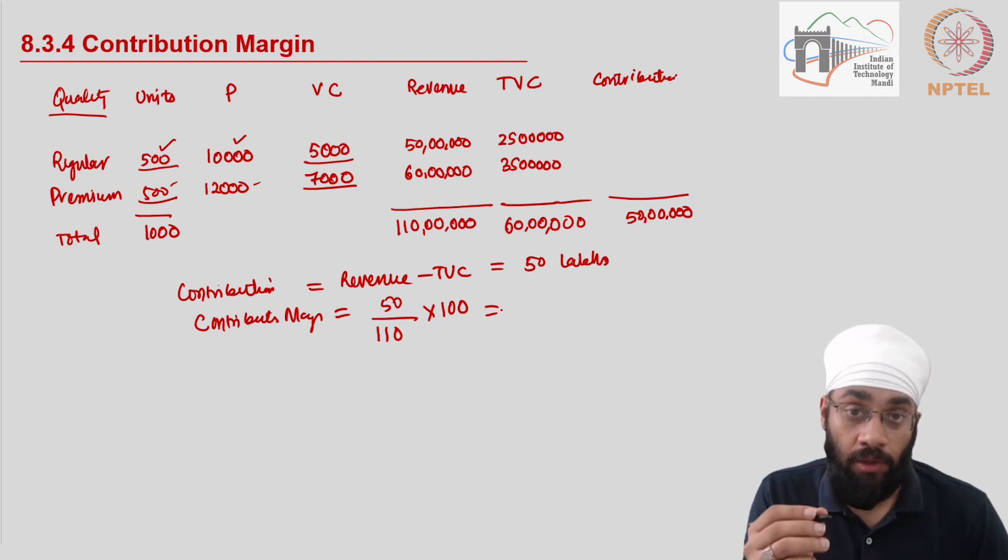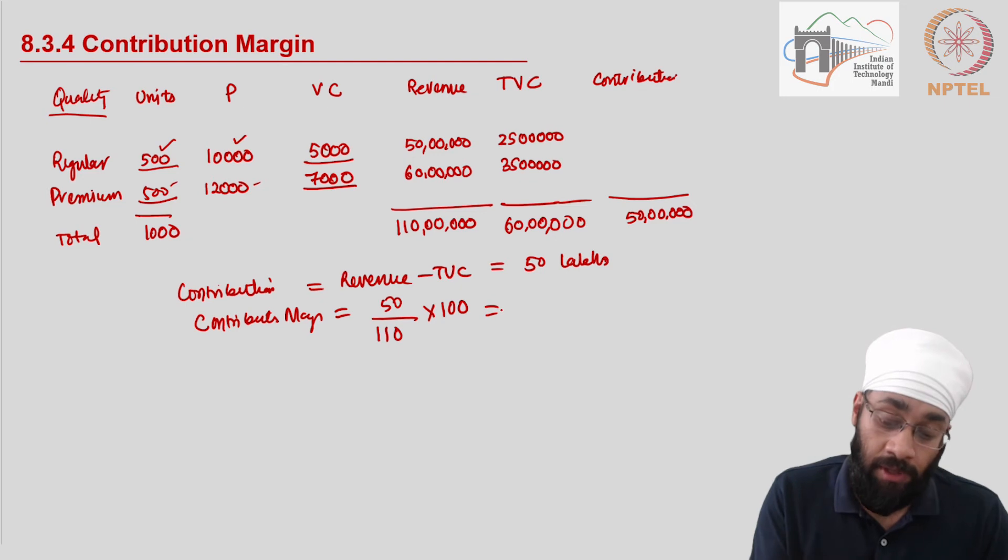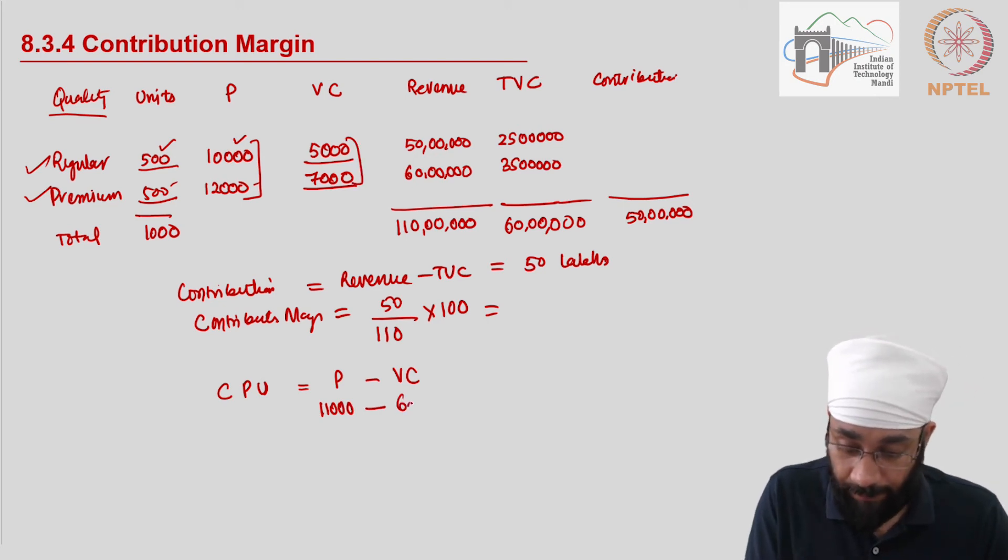We could also take the contribution per unit and figure this out. In order to figure out contribution per unit, you have to do an average because you have two different quality of the products. So the average price comes out to be 11,000. So P minus variable cost per unit, average price is 11,000 minus average variable cost is 6,000, which gives you 5,000 as the contribution per unit.